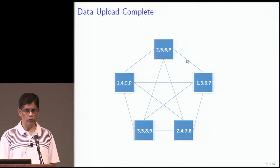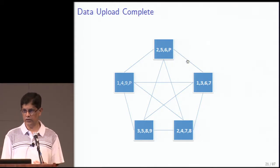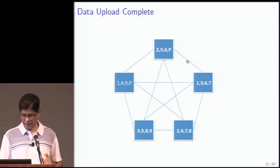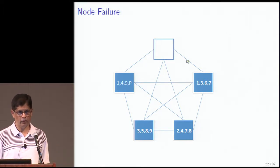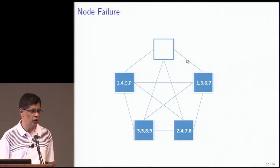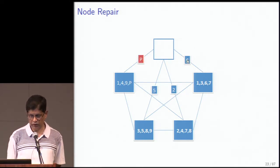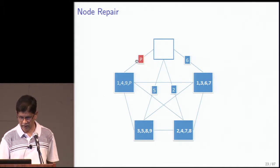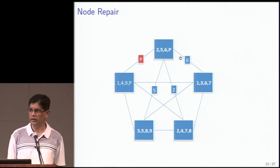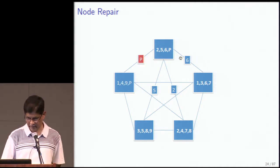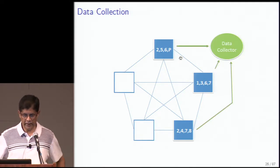Node repair is easy. If the top node fails, every node shares exactly one symbol in common with its neighbors. The four remaining neighbor nodes each supply one missing symbol, and you've replaced the failed node. That's why these are called repair-by-transfer codes — node repair is exceedingly simple, just transferring stored symbols.